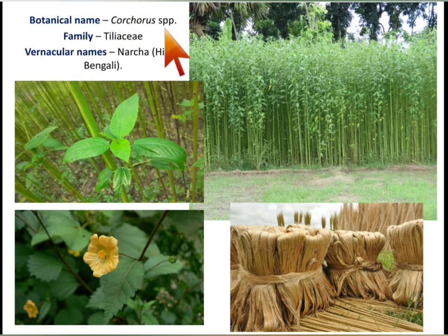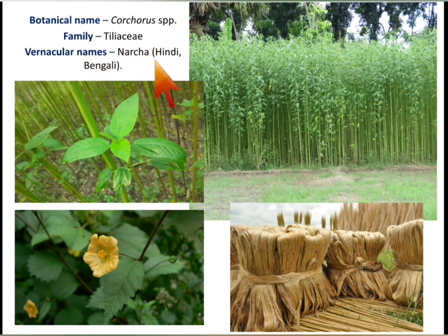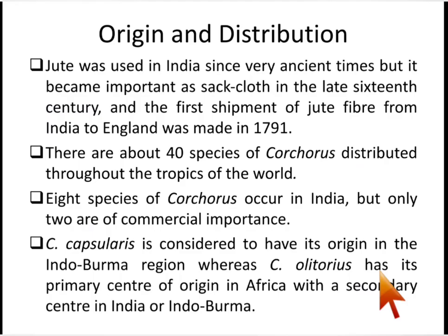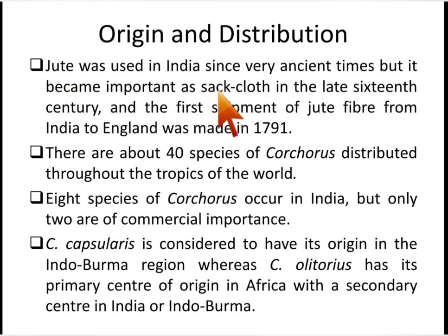Jute plants are very tall. These are the leaves, the flowers, and these are the jute fibers — brown in color after extraction. Regarding origin and distribution, jute was used in India since very ancient times but became important as a sack cloth in the late 16th century, and the first shipment of jute fiber from India to England was made in 1791.